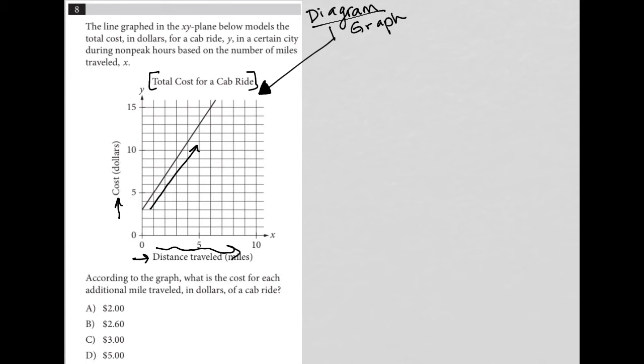the cost increases, which is exactly what we expect to happen. So the information here says the line graphed in the x-y plane below models the total cost in dollars for a cab ride, y, in a certain city during non-peak hours based on the number of miles traveled x.